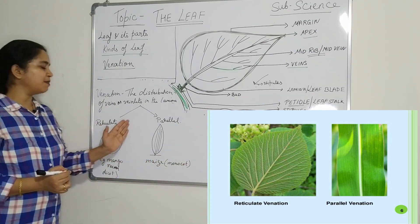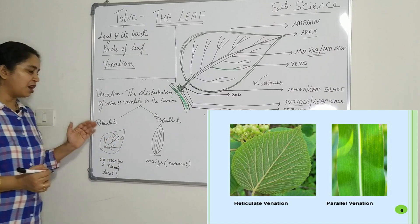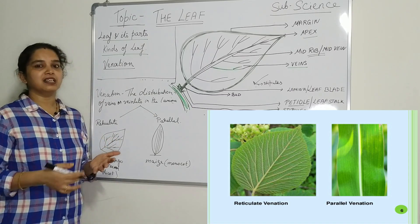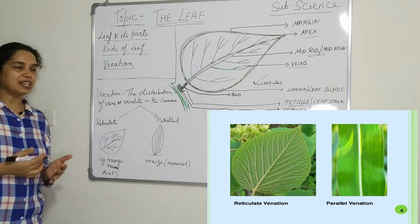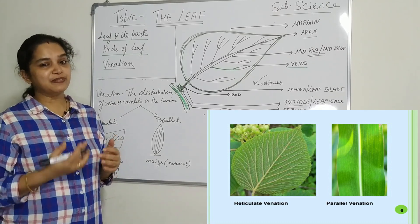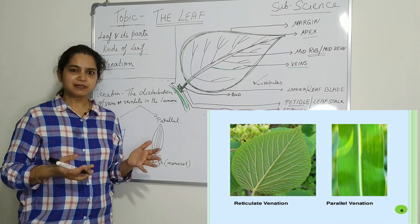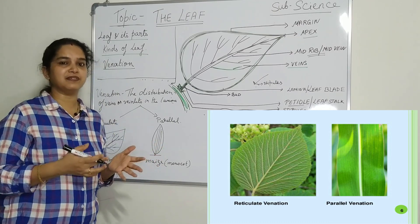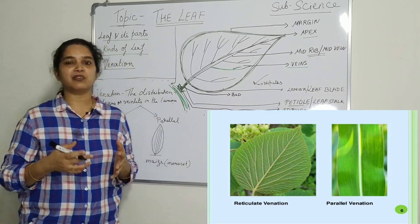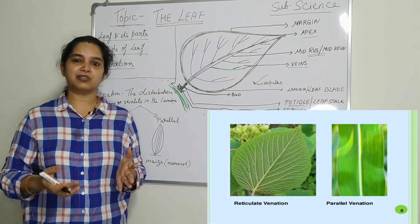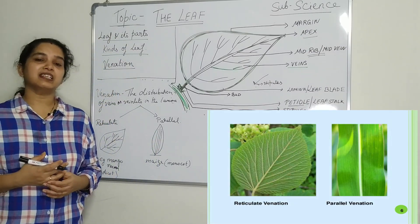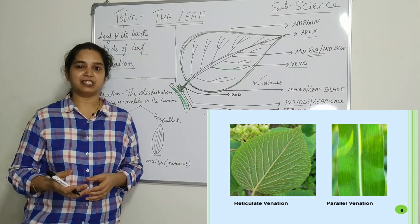This is all about venation — how the veins are arranged in the leaf lamina. Today we studied about the different types of leaves, their shapes, the parts of the leaf, and about venation — what it is and the different types of venation. Thank you.